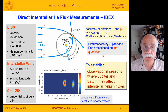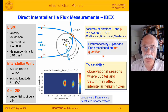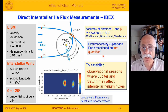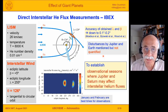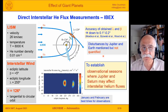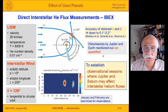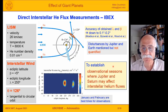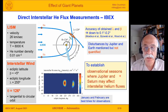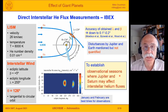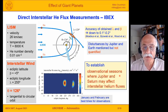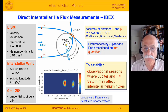The giant planets could provide such disturbances. Disturbances by Jupiter and the Earth were mentioned in the literature but were never really quantified. The goal of this work is to establish observational seasons where Jupiter and Saturn — two of the most massive planets in the solar system — may affect interstellar helium flux properties.